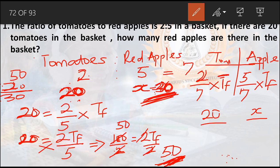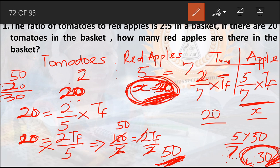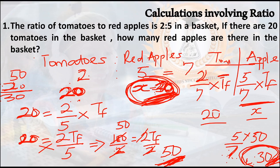There are 30 red apples in the basket. You can verify this another way: five over seven multiplied by 50, and if you solve that you also arrive at 30. Both methods give the same answer.